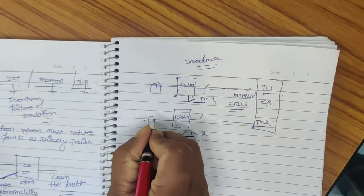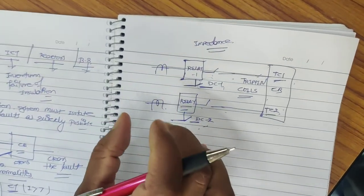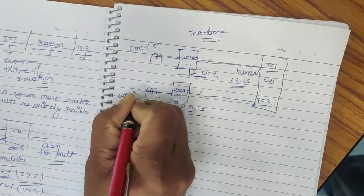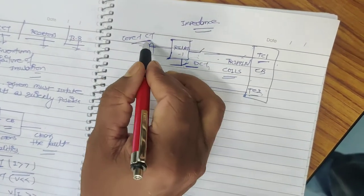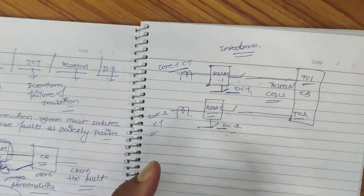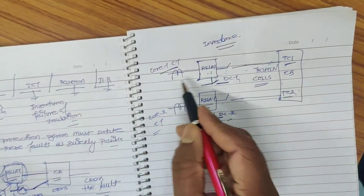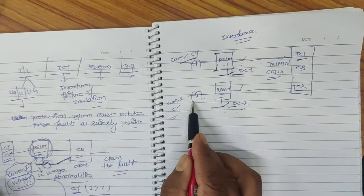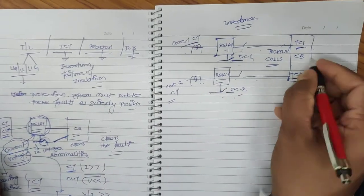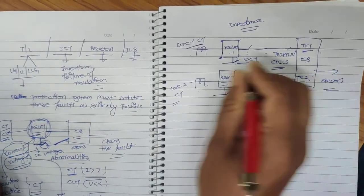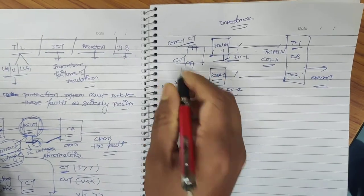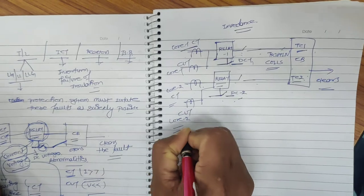Behind the relays, there are CTs and CVTs. We cannot duplicate the CT itself, but we can have two different cores of a single CT — Core 1 and Core 2. If there is any problem in Core 1 of the CT, that path will not detect faults, but Core 2 is healthy. We are assuming only a single failure at a time, not multiple failures. So if Core 1 fails, Core 2 will provide accurate CT measurement, the relay will detect the fault, and from DC Source 2 it will energize Trip Coil 2 and clear the fault. Similarly, for an impedance relay, we will also have CVT Core 1 and CVT Core 2.